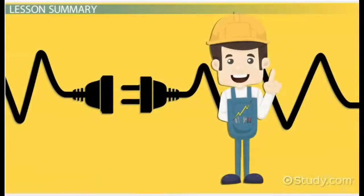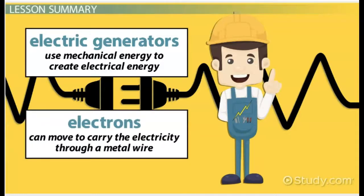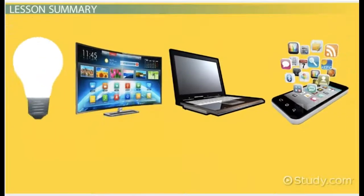Electrical energy is a result of the conversion of other types of energy. Electric generators use mechanical energy to create electrical energy, using movement through a magnetic field to get the electrons, which can move to carry the electricity through a metal wire. The flow of electrons is now electric energy that can be used to power all sorts of things, like televisions and lights.